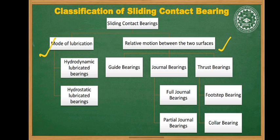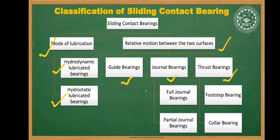The first group is subdivided into two other categories: hydrodynamic lubricated bearings and hydrostatic lubricated bearings. The second major group, according to the relative motion between the two surfaces, is classified into three categories: guide bearings, journal bearings, and thrust bearings. Journal bearings are further classified into full journal bearings and partial journal bearings, and thrust bearings into footstep bearing and collar bearing.